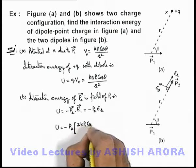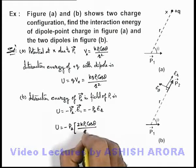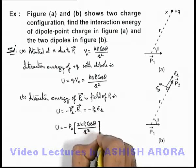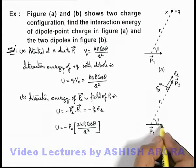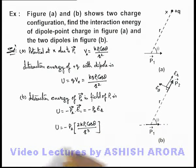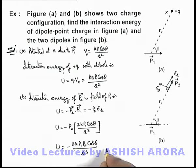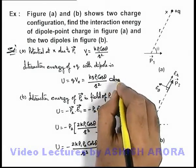2 k p1 cos theta by r cubed. Here we're using cos theta because the angle theta is given from the axis of this dipole. So the result we're getting for the interaction energy is minus 2 k p1 p2 cos theta by r cubed. That'll be the answer to part (b), and for part (a) this is the answer to this problem.